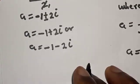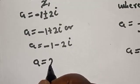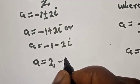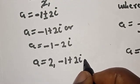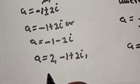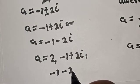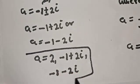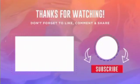Our final answers for a are: a equals 2, a equals negative 1 plus 2i, and a equals negative 1 minus 2i. If you enjoyed the class, please don't forget to like, share, comment and subscribe. Thank you.